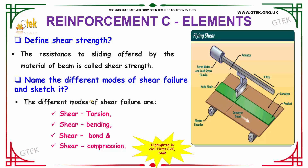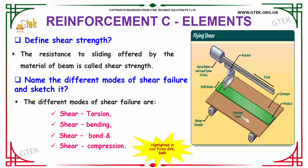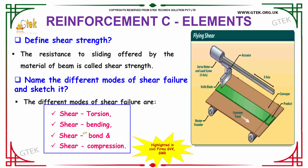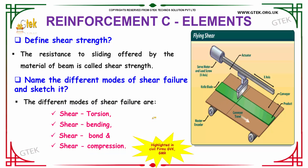Our next question is: name the different modes of shear failure. The different modes of shear failure are: Shear torsion, Shear bending, Shear bond, and Shear compression. So these are the modes of shear failure that can possibly occur.